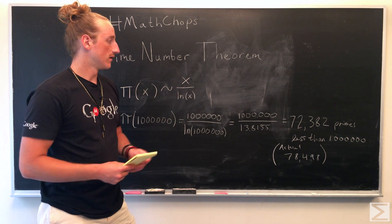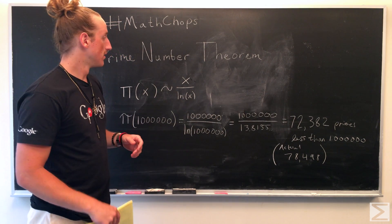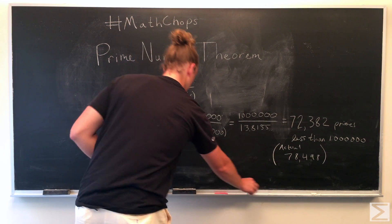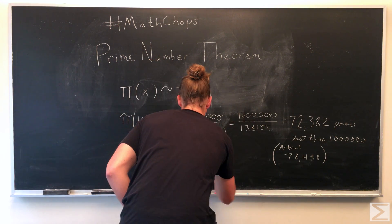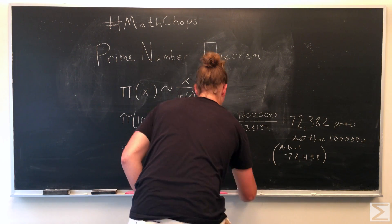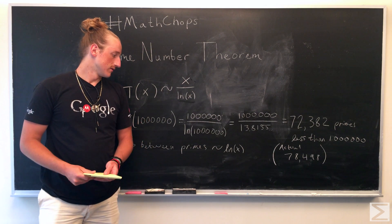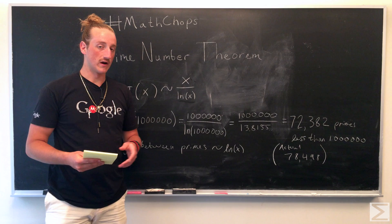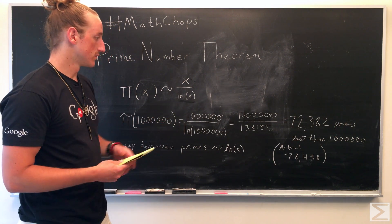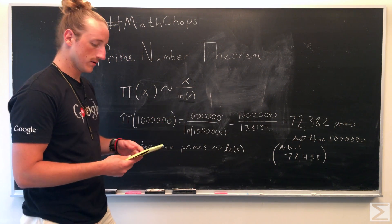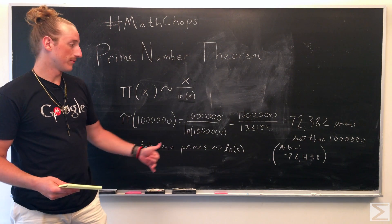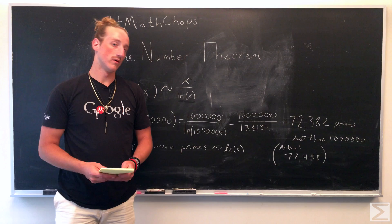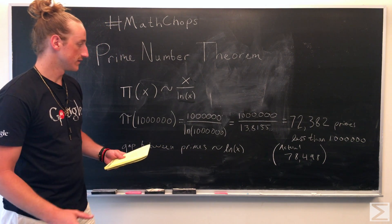We can also look at the gap between primes, which is just going to be this ln of x. Again, this is an approximation because you have numbers like twin primes, which are right after each other, or two spaces away. And so the gap between primes is approximately, for a million, is approximately 13.8155, so about 13 or 14.